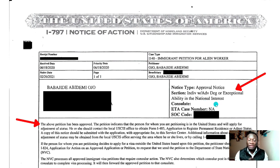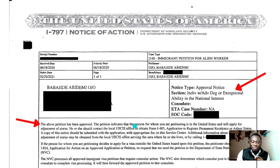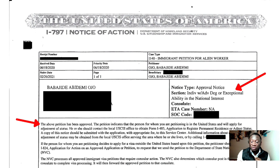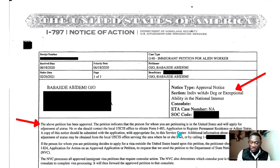This form is used to file an immigrant petition — if it's a family-based visa it will say so here. The first paragraph of the approval reads: 'The above petition has been approved. The petition indicates that the person for whom you are petitioning is in the United States and will apply for adjustment of status. He or she should contact the local USCIS office to obtain Form I-485, Application to Register Permanent Residence or Adjust Status. A copy of this notice should be submitted with the application with the appropriate fee to the service center.'